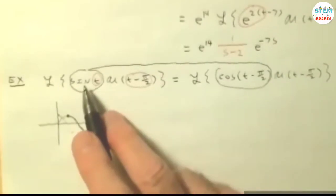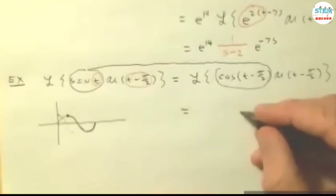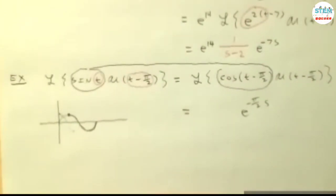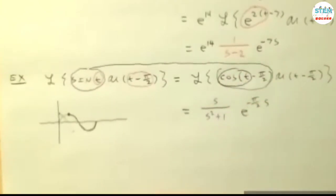So that's the one you have to be careful with because it does change. It goes from sine to cosine if you shift it. But then that's the same idea. So I'm going to do the u. You get negative pi over 2 s. And then I'm going to focus on my function then. Cosine of t is s over s squared plus 1.